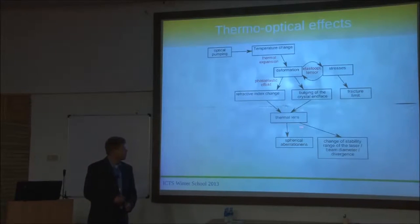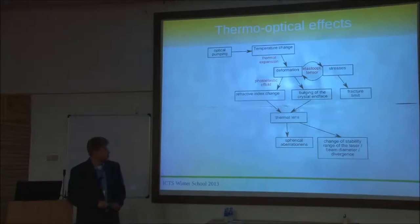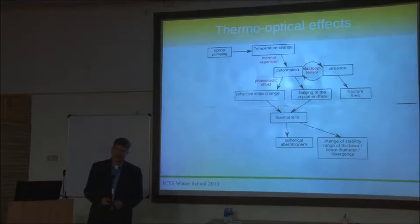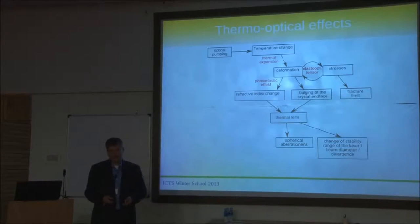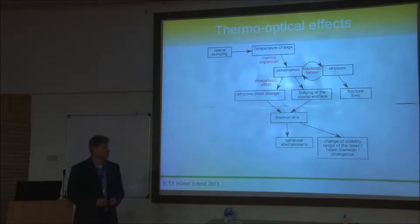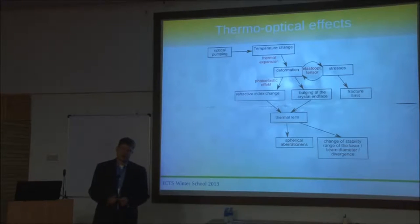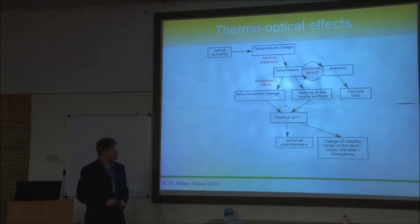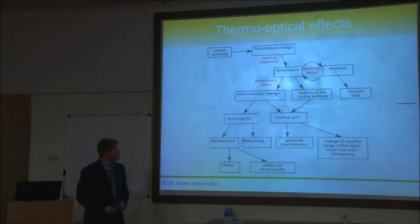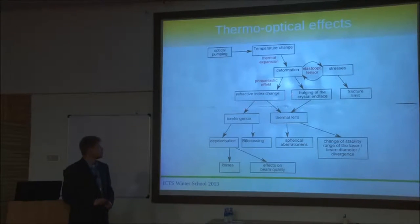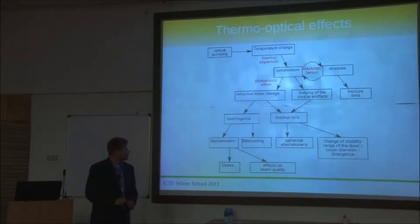The thermal lens is not a perfect lens — it has many spherical aberrations. Since we can't get rid of that effect, we treat it as a normal lens whose refractive power depends on the heat generated in the crystal. It changes the stability range of the laser, just as a normal lens would. The refractive index doesn't change equally in all directions — it's not isotropic — which leads to birefringence.